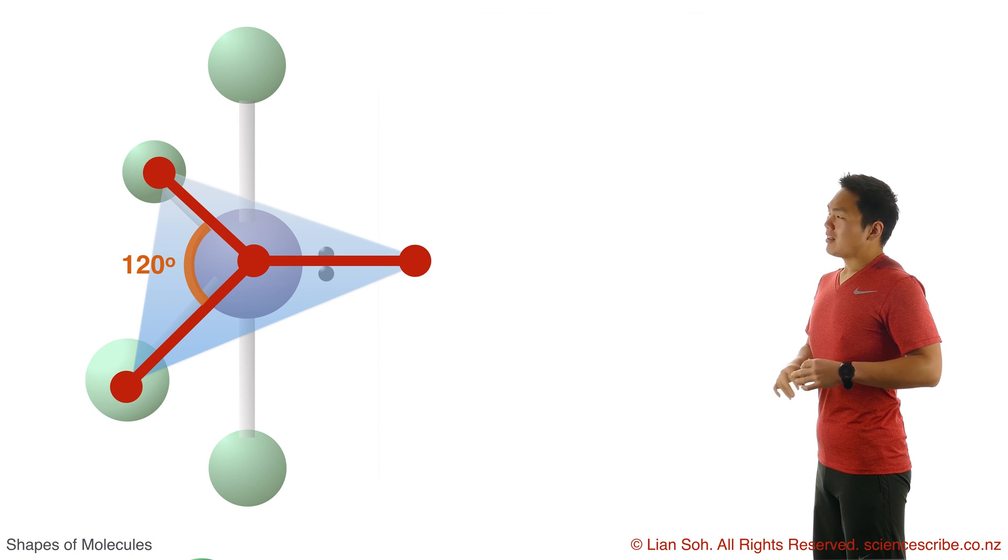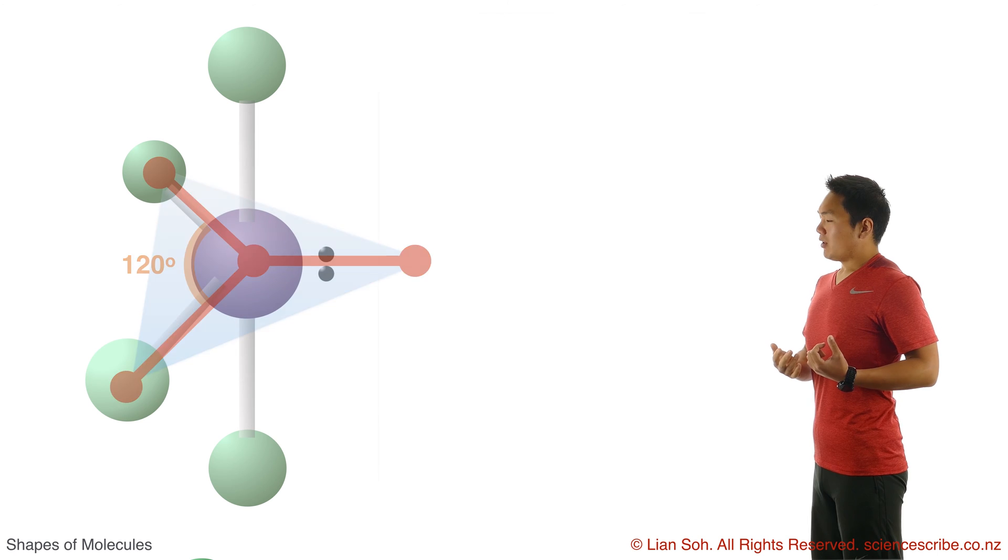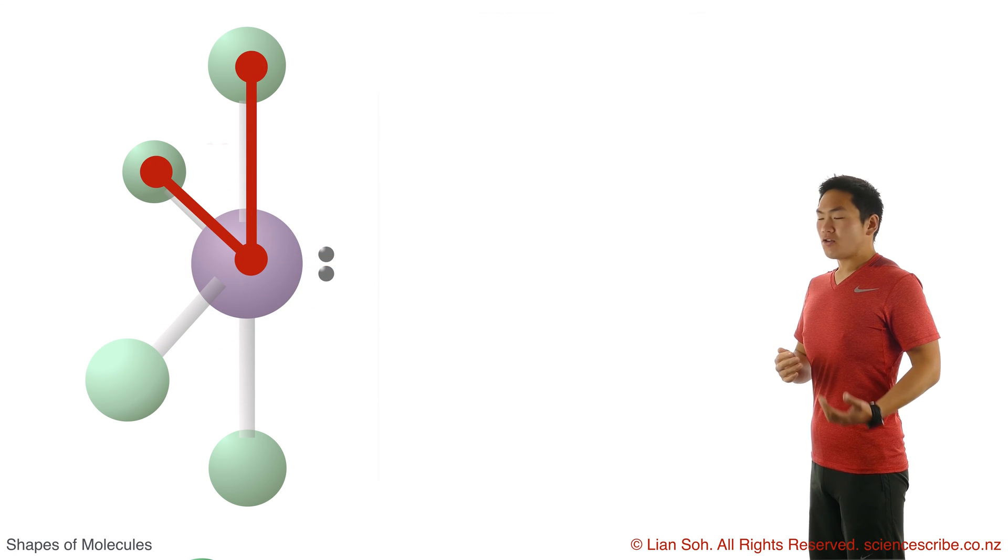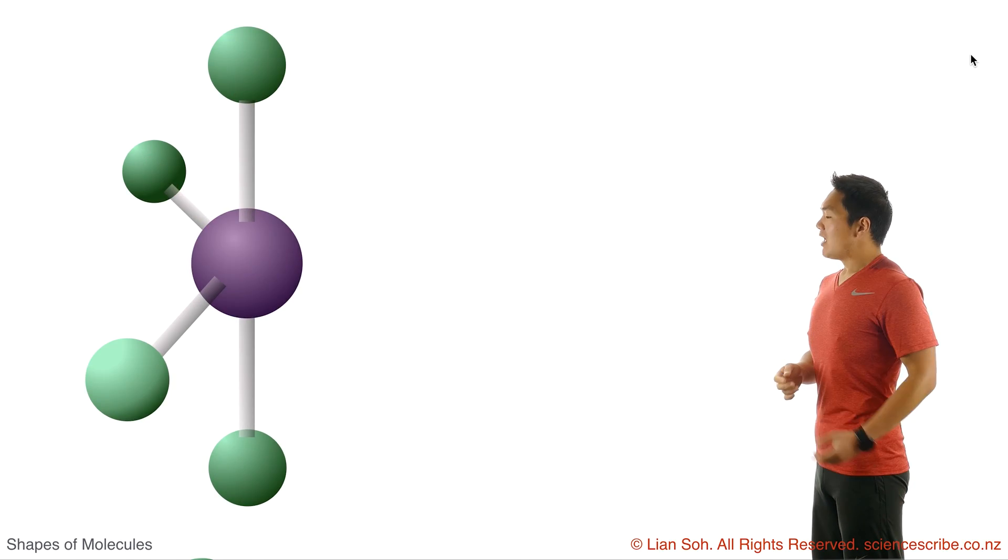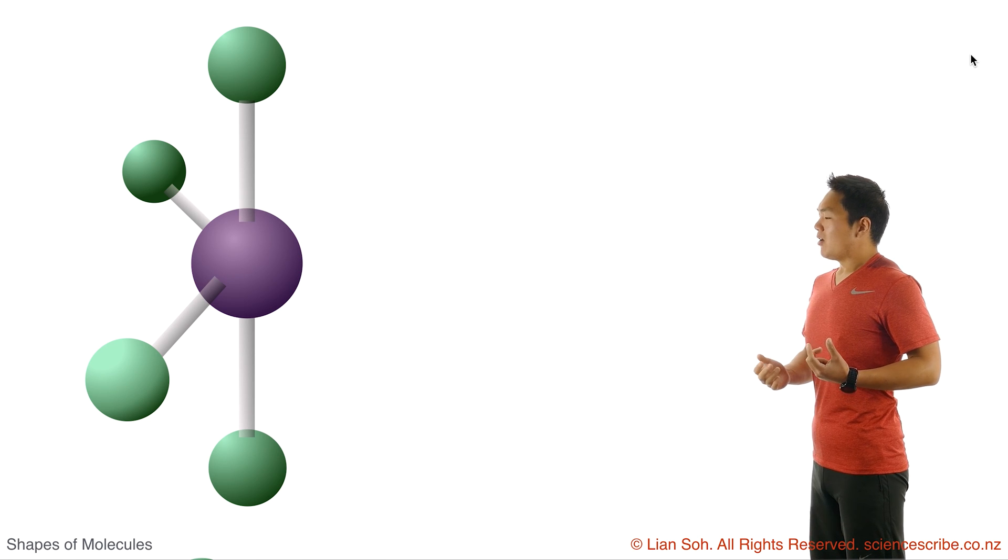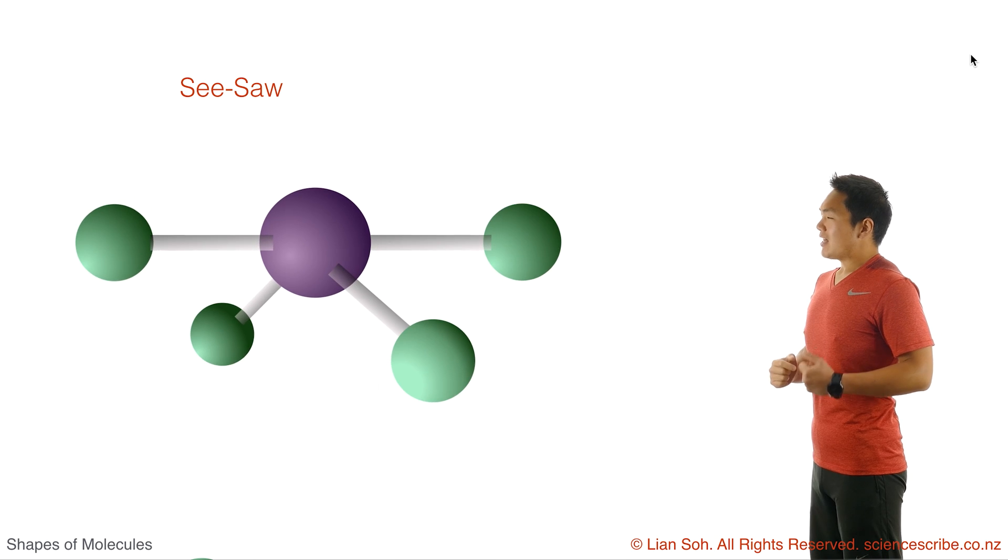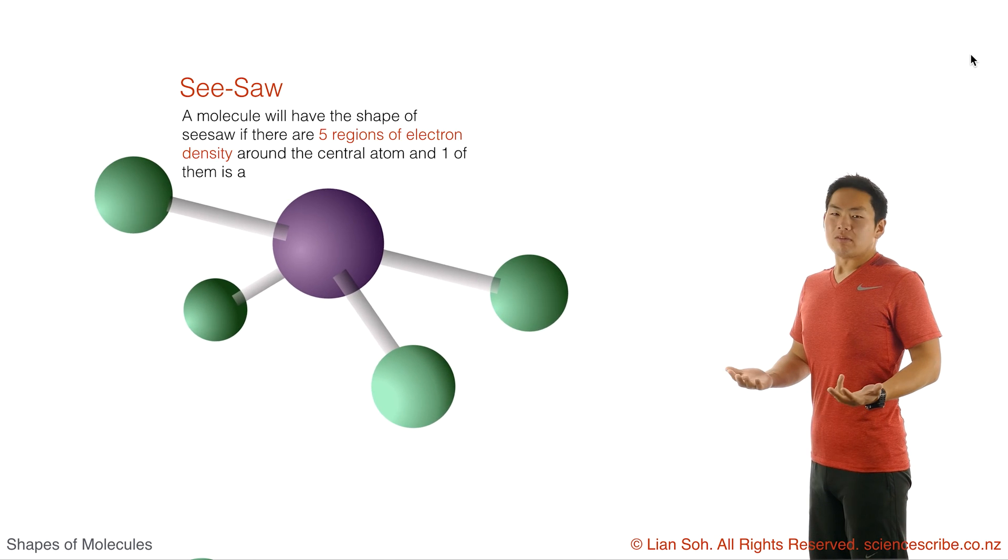I can see that in the flat plane that angle is still going to be roughly 120 degrees, and as for the vertical part, well that's still going to stay at about 90 degrees. As for what this shape looks like, well if I do some mental manipulation, I can see that it looks like a seesaw. And that's why we call it a seesaw.